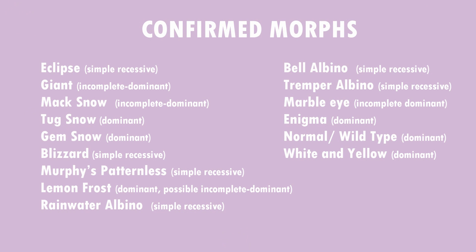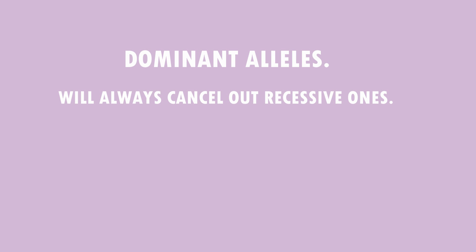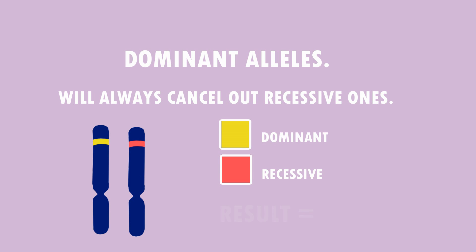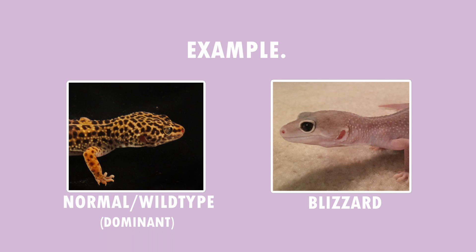Now let's look back at the morphs. You may have noticed that next to the names there are words such as dominant and recessive — these refer to dominant and recessive alleles. Dominant alleles pretty much do what their name says: they dominate the overall look of a gecko and will always cancel out recessive ones. You only need one dominant allele for the trait to be seen. For example, if you cross a normal or wild type leopard gecko with a blizzard, the normal type is the dominant one — represented by a capital N — and the blizzard is recessive, represented by a lowercase b. Now we're going to put them in a Punnett square.